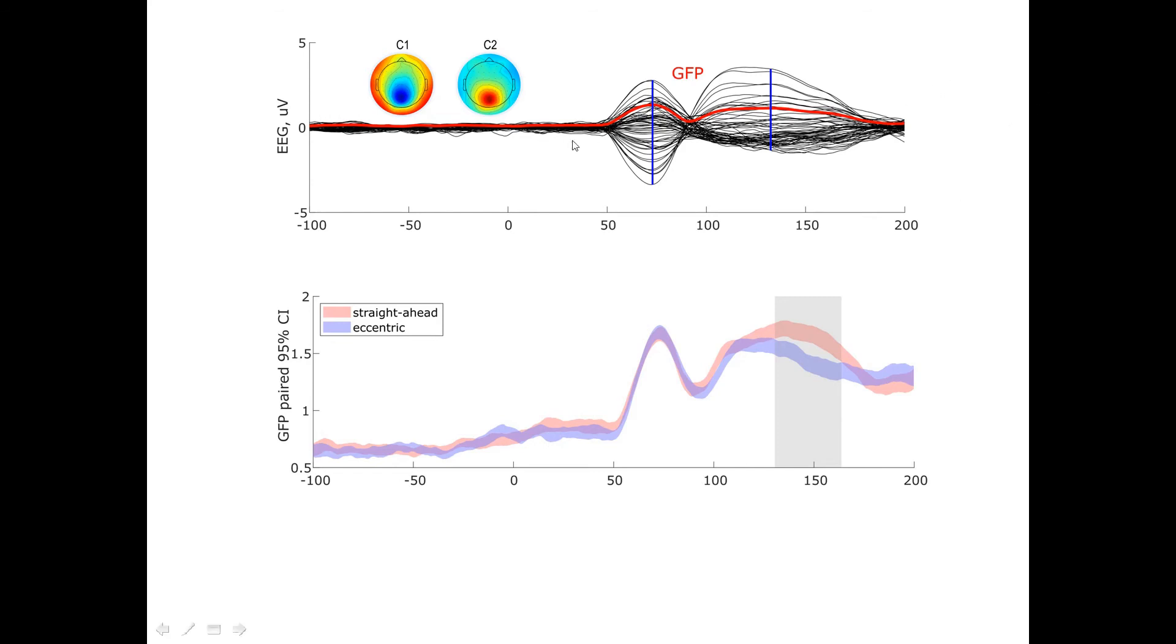The GFP, global field power, beautiful and simple trick. You compute a standard deviation across 64 electrodes or 60 electrodes or 30, doesn't matter. And it goes up when something happens somewhere in the brain. When there is nothing on the baseline, it's flat. And after this component is over, it is also mostly flat. Well, I don't show it, but you can trust me.